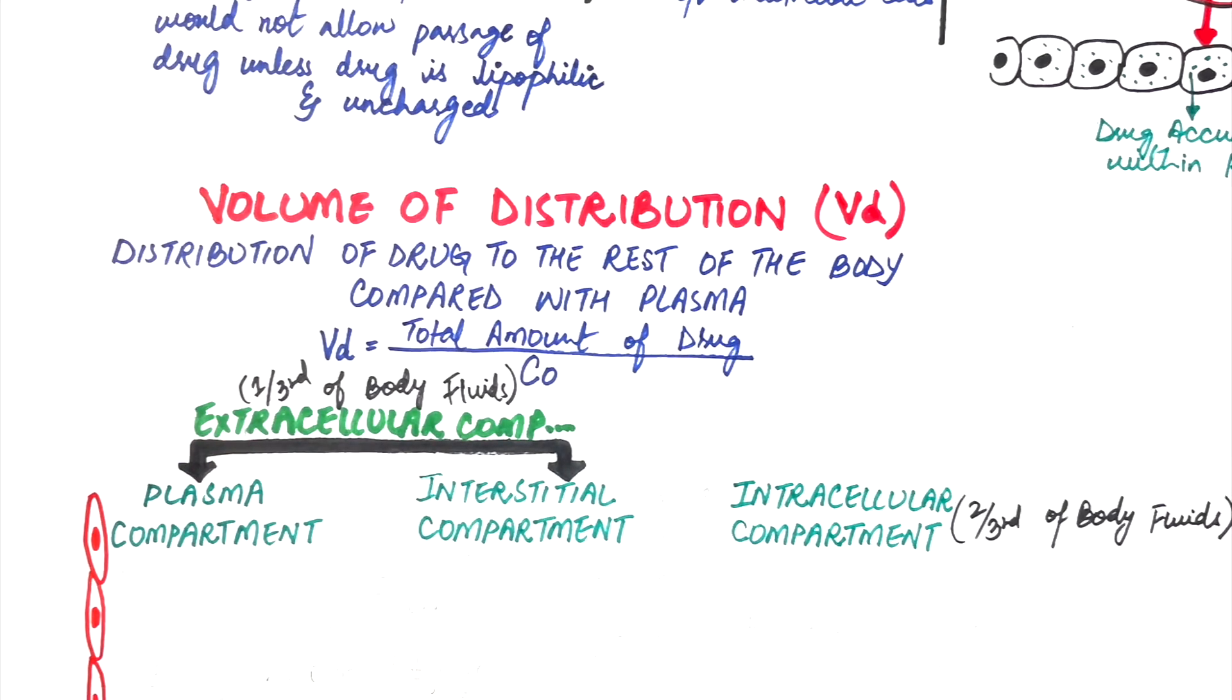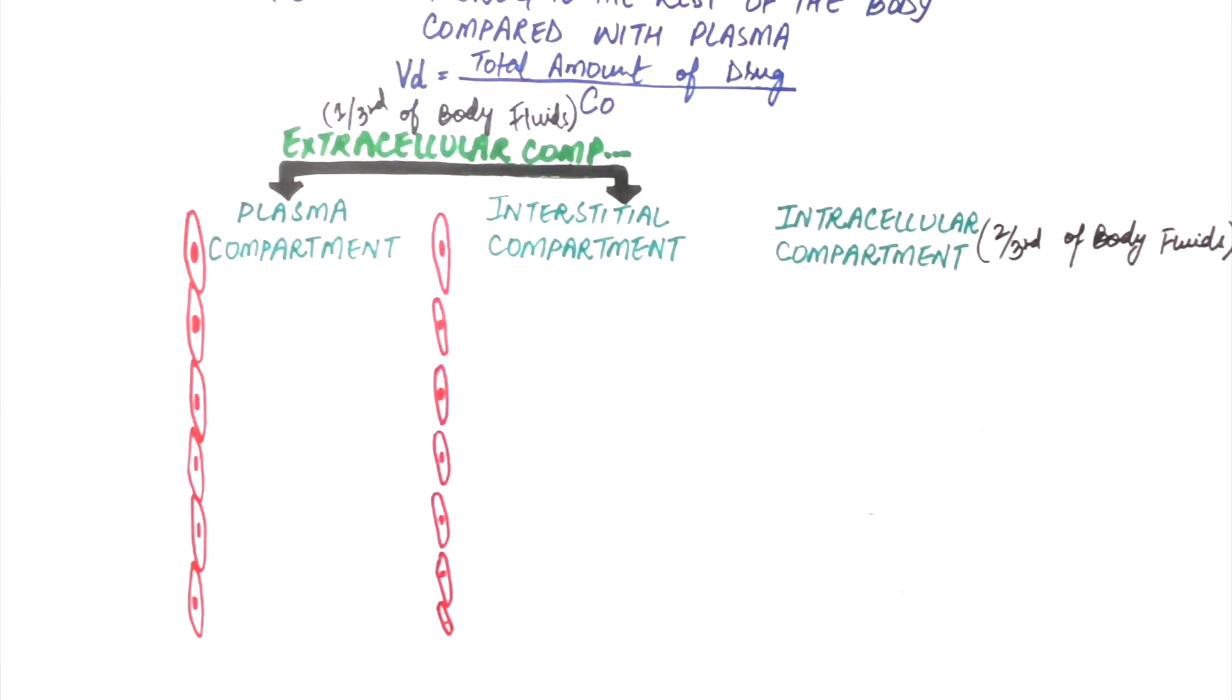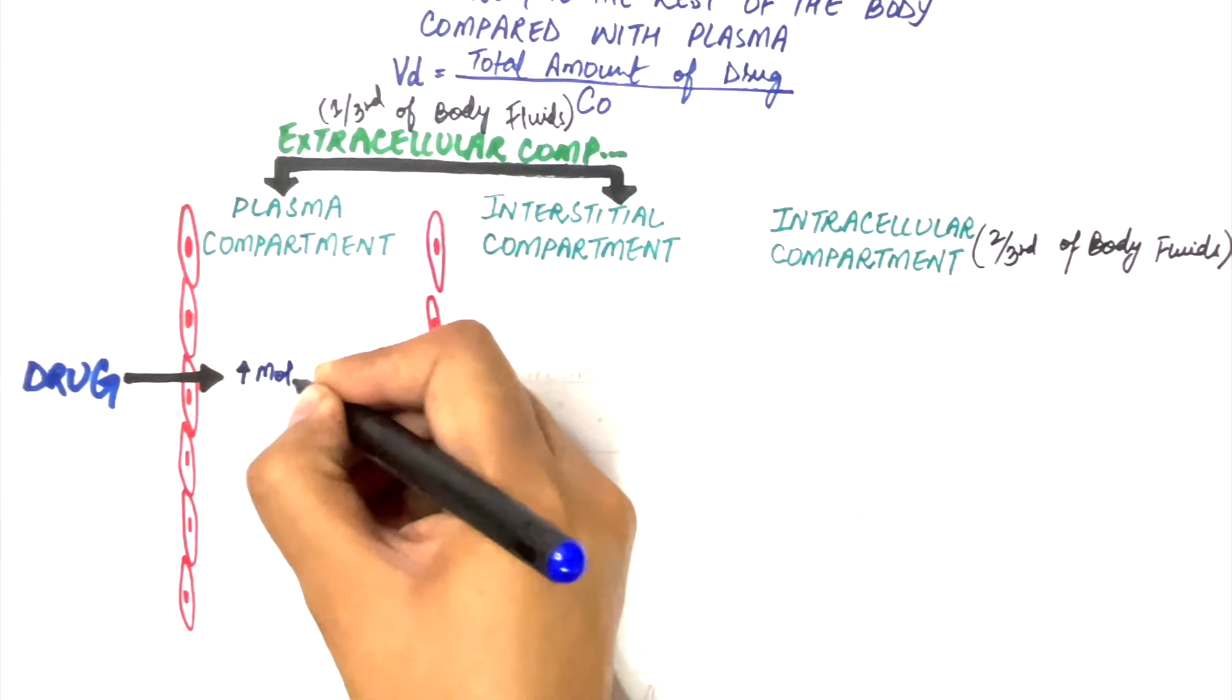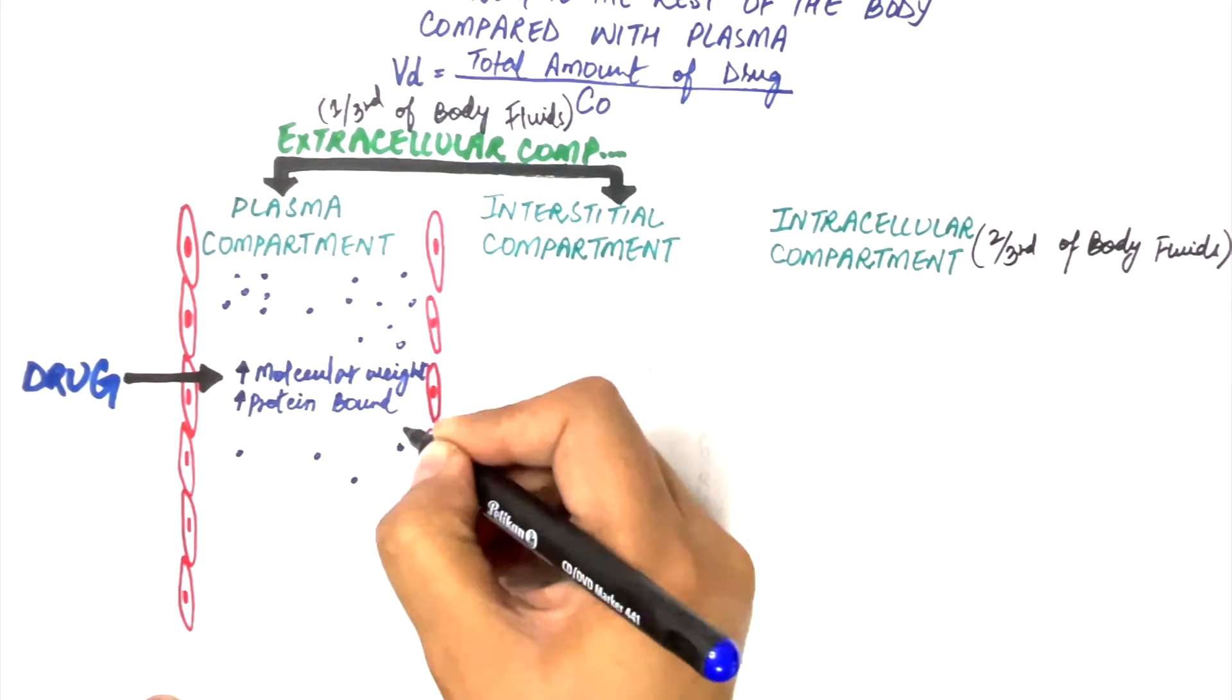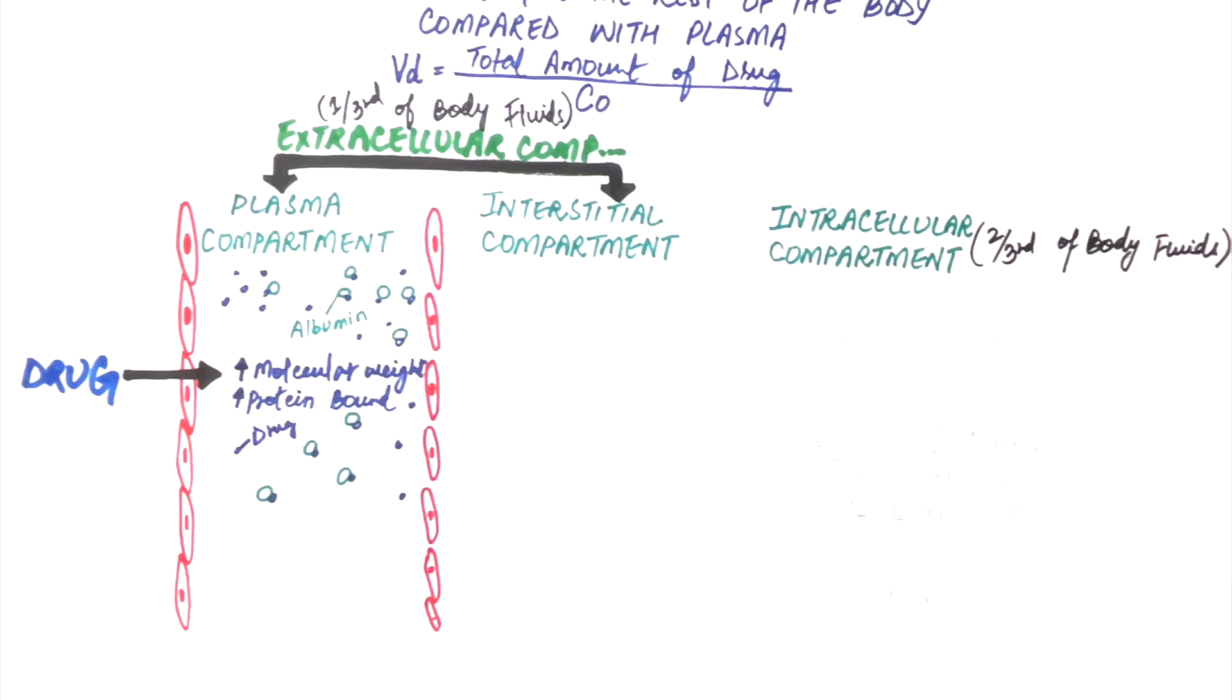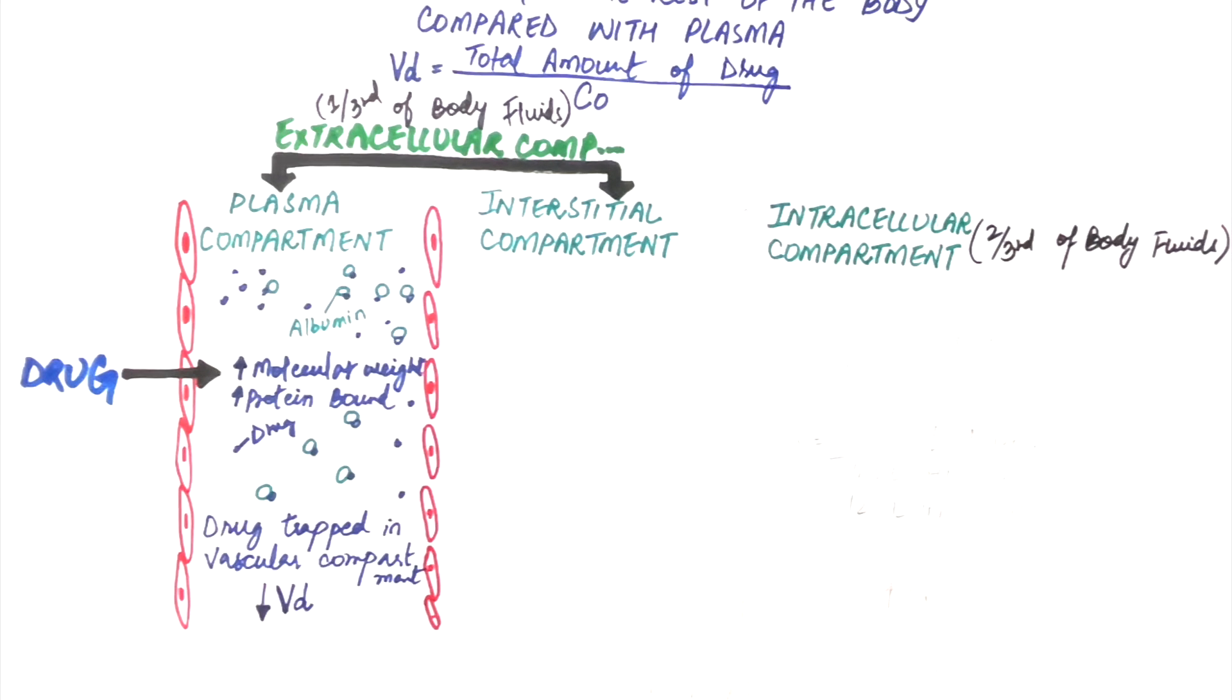Let's look at how drugs can be distributed throughout all these three compartments. In the plasma compartment, if the drug has a high molecular weight or it is highly bound to plasma proteins, it cannot easily pass to other compartments. The drug wouldn't be able to pass easily through the slit junctions of endothelial cells of blood vessels, hence the drug becomes trapped within the vascular compartment. As a result, the volume of distribution of such a protein-bound and high molecular weight drug is reduced.